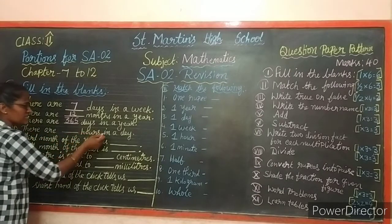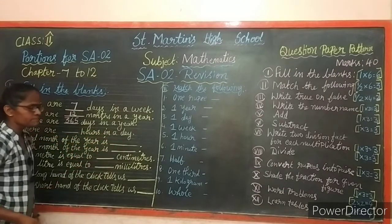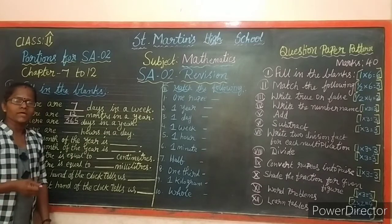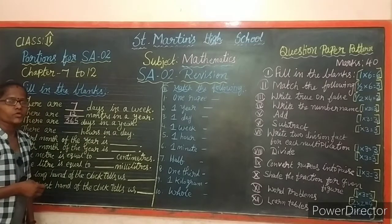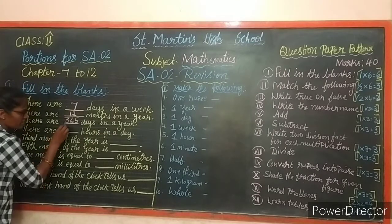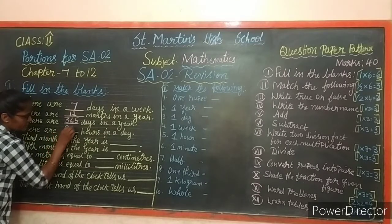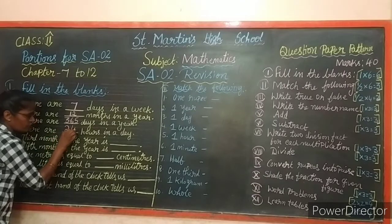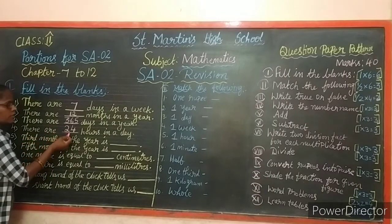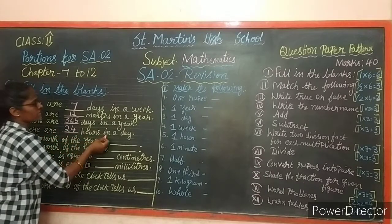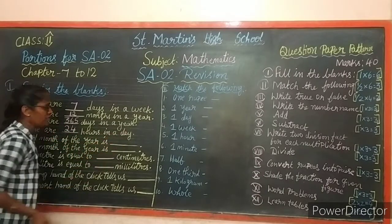Next: there are dash hours in a day. How many hours does a day have? 24 hours. There are 24 hours in a day.